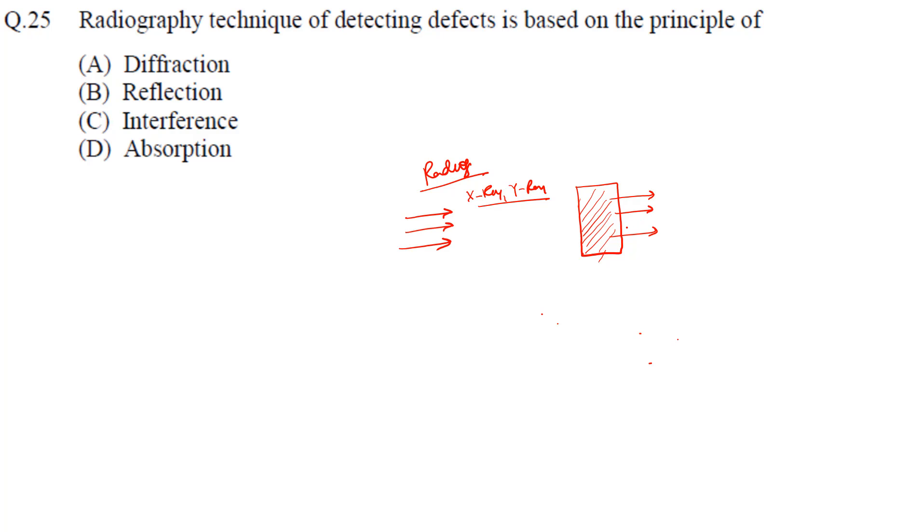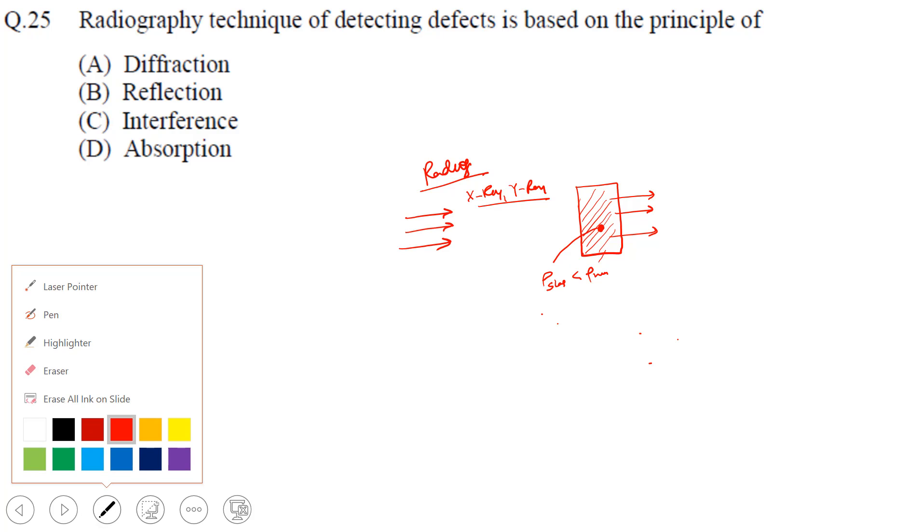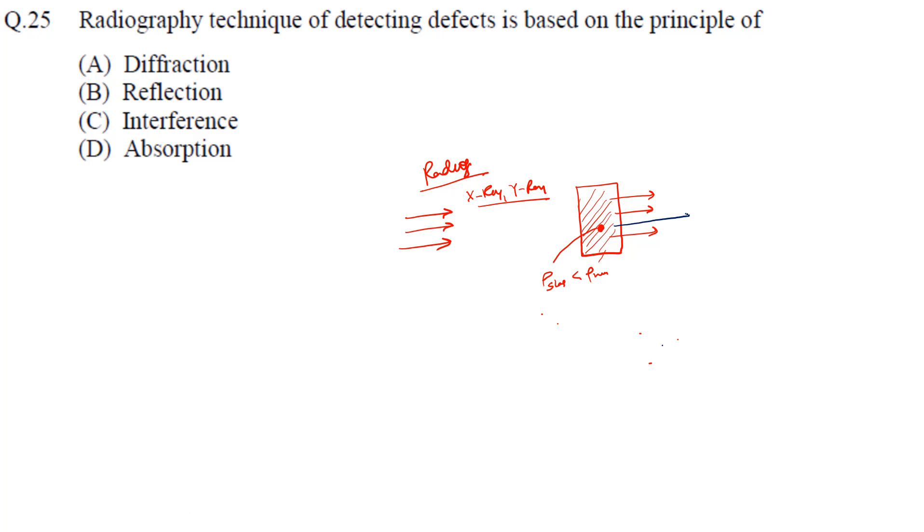If it is uniform material of the same kind, there will be uniform intensity. Suppose there is one defect like slag which has density lower than the material. The slag will absorb less, so the wave passing through will be of higher intensity. We put a screen. These rays of same intensity create some color, while the higher concentration ray creates more intense color.